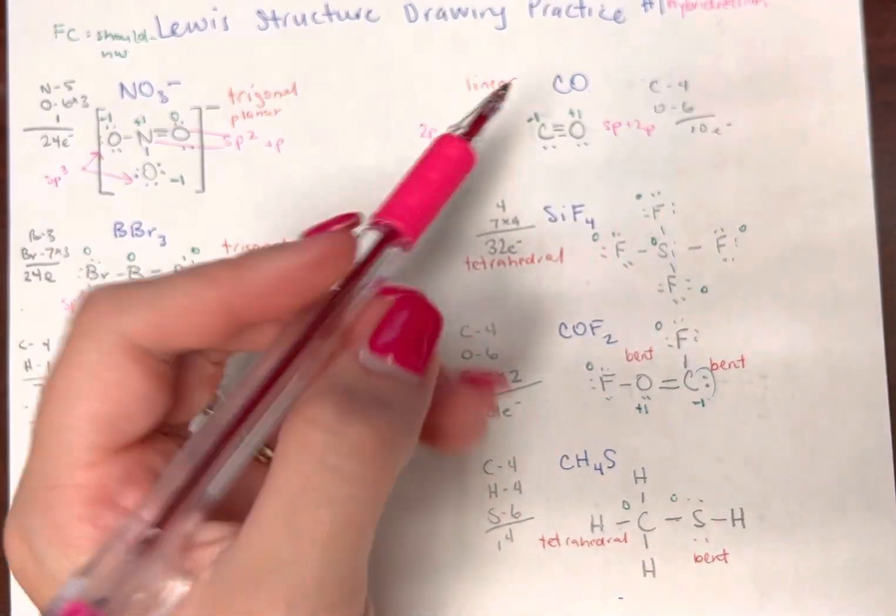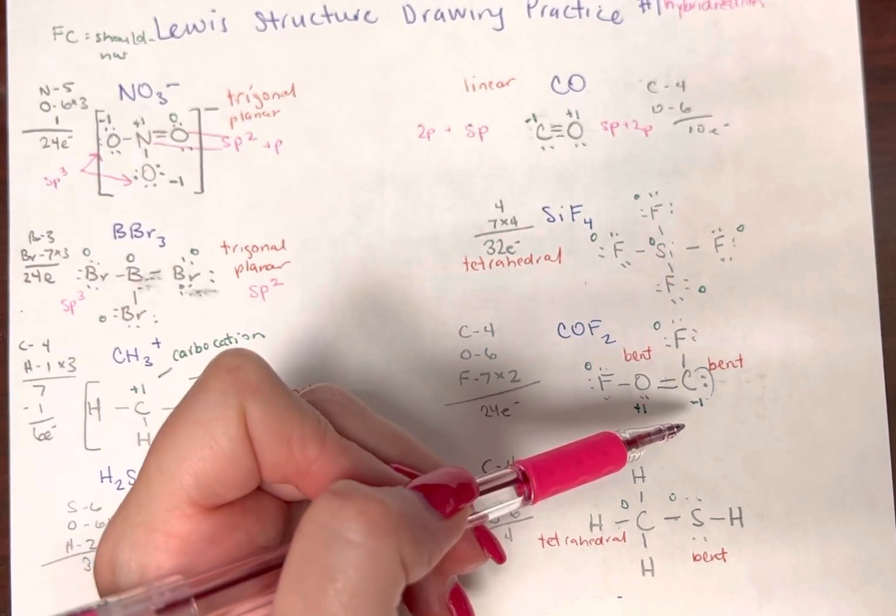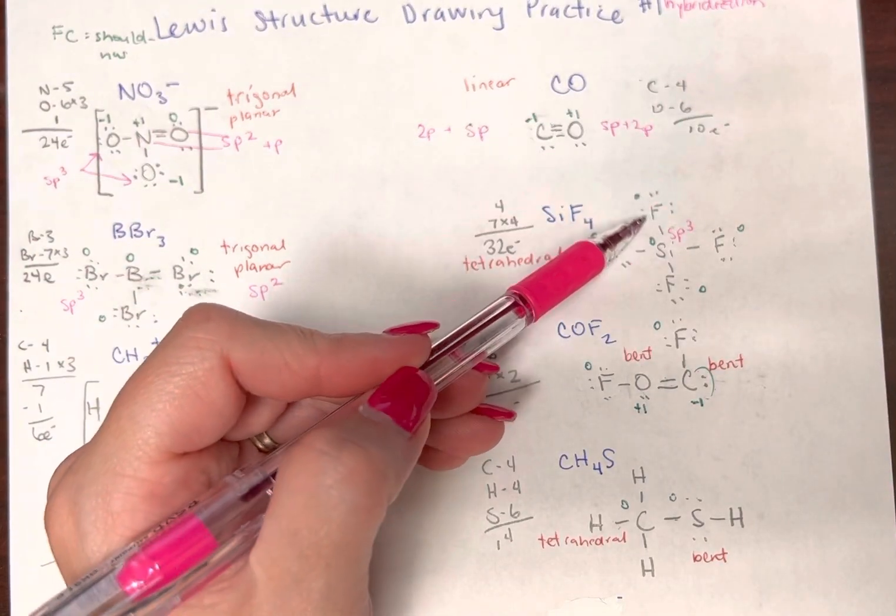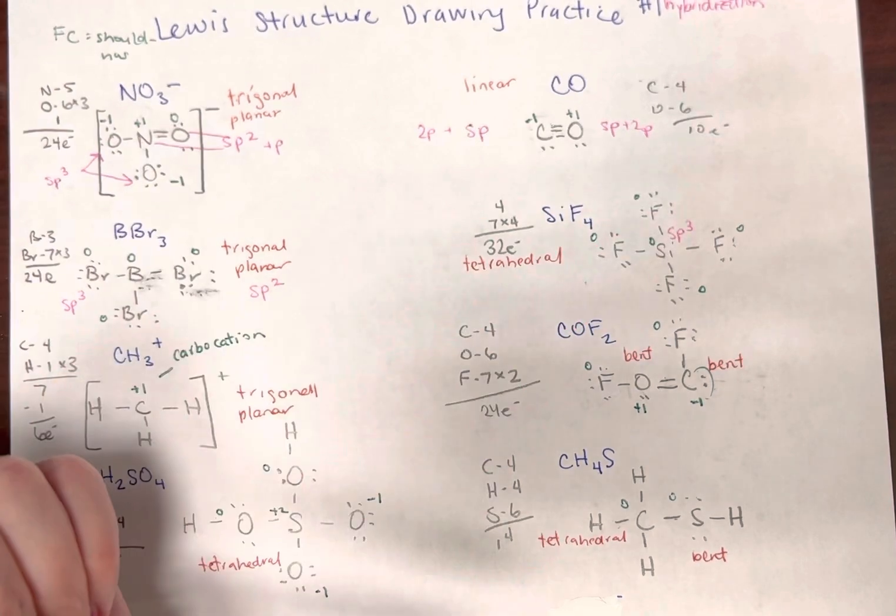Okay, here silicon has one, two, three, four friends, so it is going to be sp3. Same with fluorine, one, two, three, four, sp3.